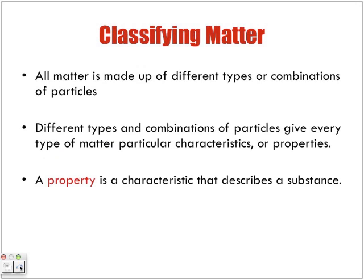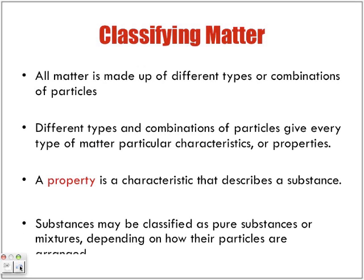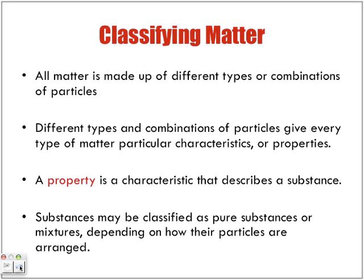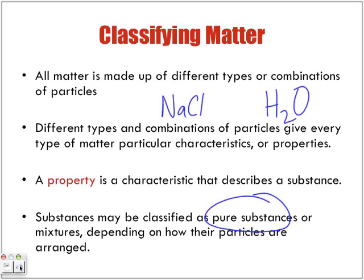A property is a characteristic that describes a substance. Substances may be classified as pure substances or mixtures depending on how their particles are arranged. We can have the pure substance of salt, NaCl — that's a pure substance. We can have water, which is also a pure substance.